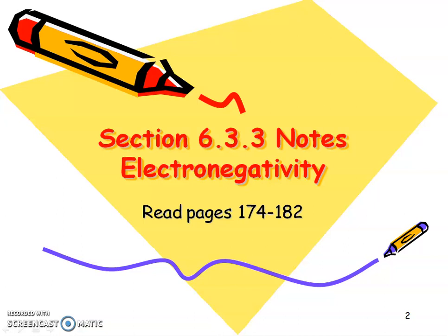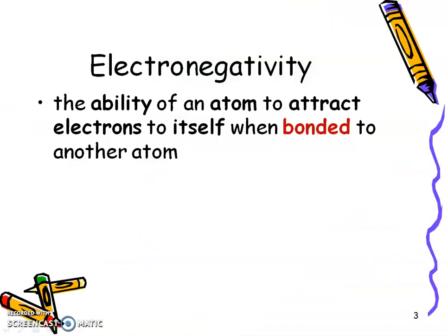This is Mrs. O'Neill for Chapter 6, Section 3, Part 3: Electronegativity — the last periodic trend you are responsible for. Pause the video, fill in those blanks, and then play to hear. Electronegativity and ionization energy are similar and have similar trends. Ionization energy is the energy needed to remove electrons from an atom; electronegativity is the ability of one atom to attract electrons to itself — how much ability an atom has to take somebody else's electron away.